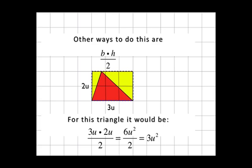So we can see that this base times height divided by 2 will find the area of any triangle. Whether it's a right triangle, an isosceles triangle, or in this case, a scalene triangle.